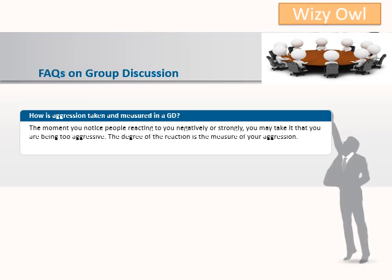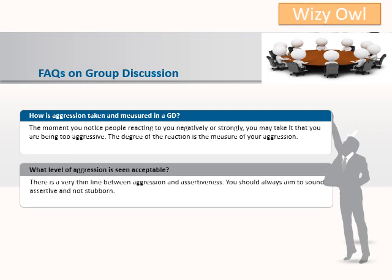How is aggression taken and measured in a group discussion? The moment you notice people reacting to you negatively or strongly, you may take it that you are being too aggressive. The degree of the reaction is the measure of your aggression. What level of aggression is seen as acceptable? There is a very thin line between aggression and assertiveness. You should always aim to sound assertive and not stubborn.